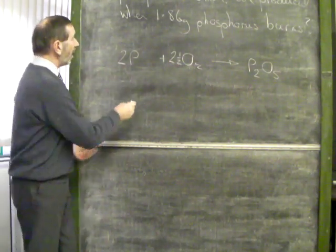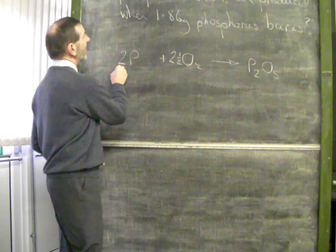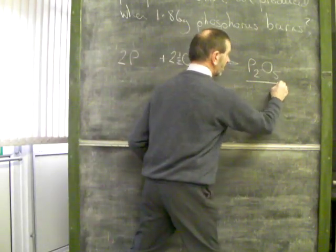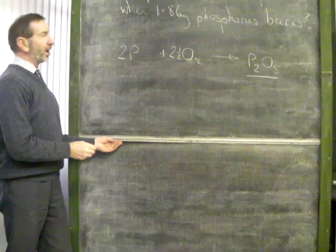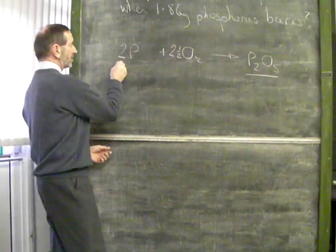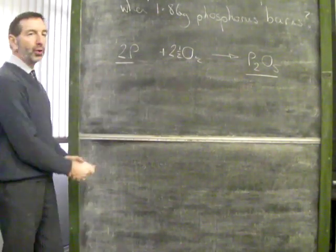The question is, how many molecules of phosphorus oxide are produced when we burn up 1.86 grams of phosphorus? So I've picked out the 2 chemicals which matter.